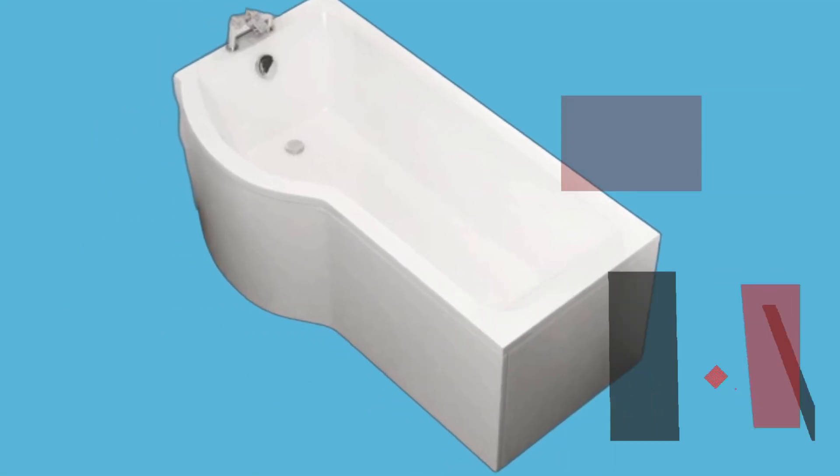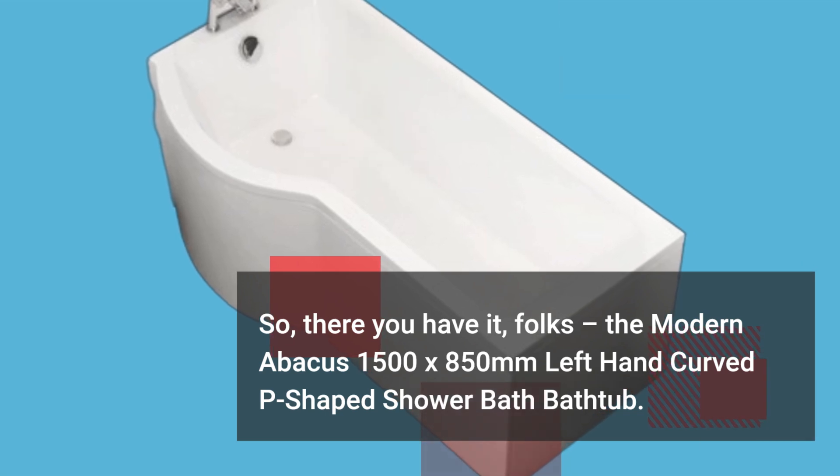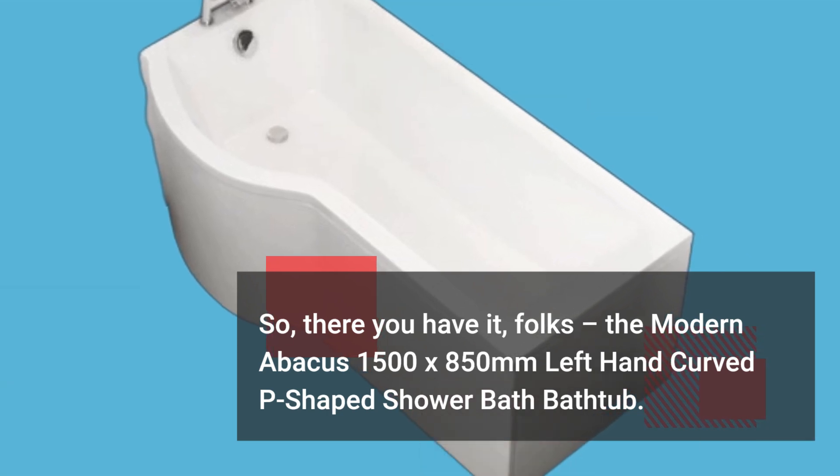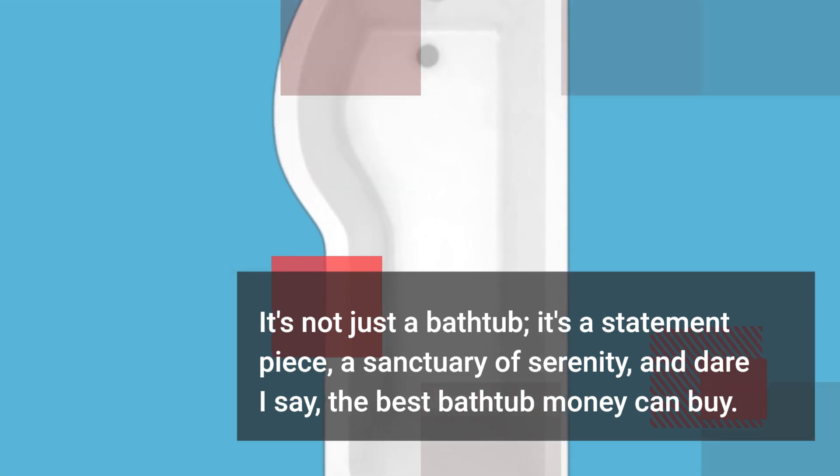So, there you have it, folks. The Modern Abacus 1500 x 850mm left-hand curved P-shaped shower bath bathtub. It's not just a bathtub, it's a statement piece, a sanctuary of serenity, and dare I say, the best bathtub money can buy.